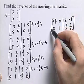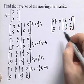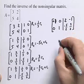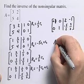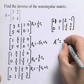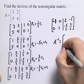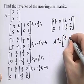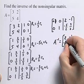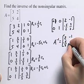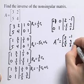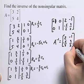Since we have our identity matrix here, the matrix that we've augmented becomes our inverse matrix. So A inverse is equal to 2, negative 1, negative 5/2, 3/2.